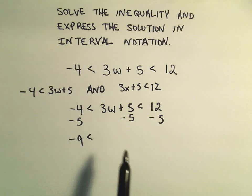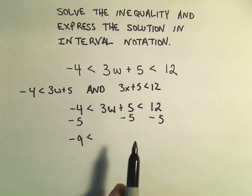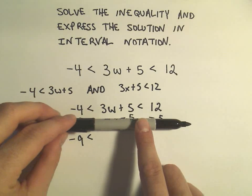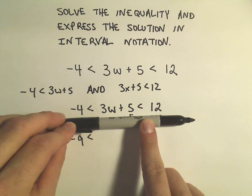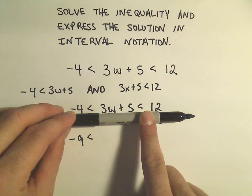So typically I'm going to do it all at once. I've got this -4 less than 3w + 5 less than 12. When I see that, I'm trying to get the w by itself in the middle.